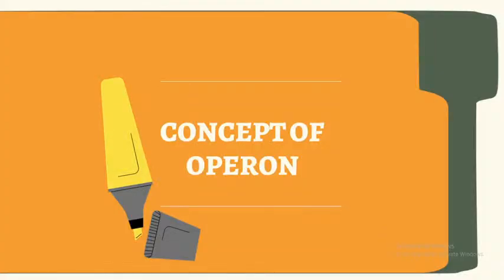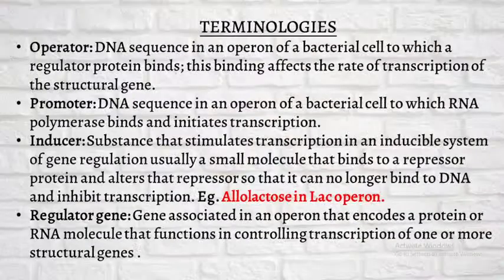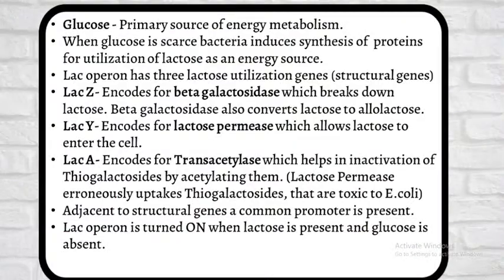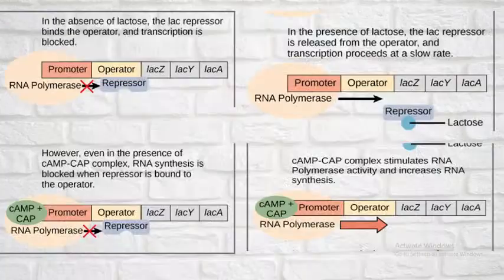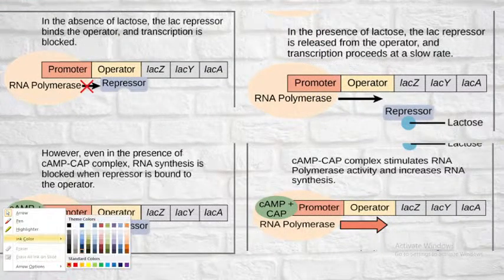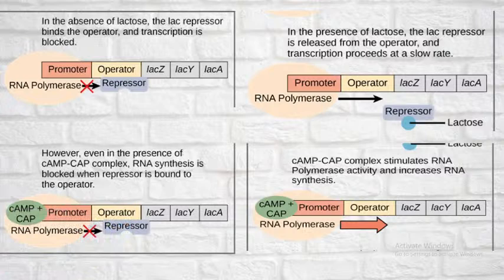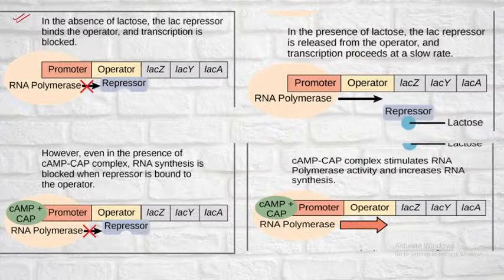So let's talk about our class today. We will be discussing the next operon model — the trp operon. Before that, let's cover the remaining portion for the lac operon. If you have not watched the previous part, please watch it, because we covered the major part first and today we will cover the remaining portion for the lac operon and then move forward to the trp operon.